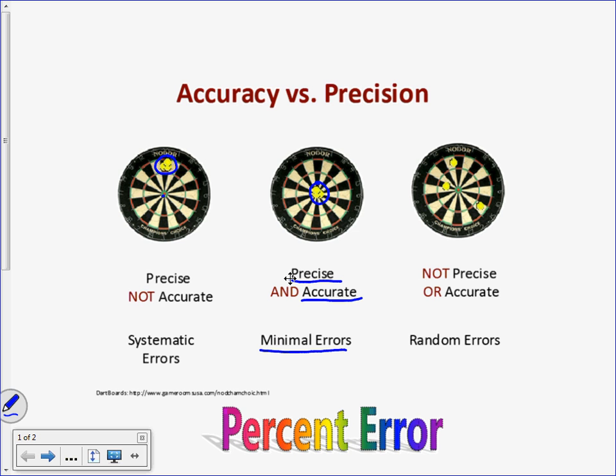Hitting the same spot each time, but being off from the target value means you're precise and not accurate. If you're all over the place, not hitting the same spot or the target value, you're not precise or accurate, and you have random errors.